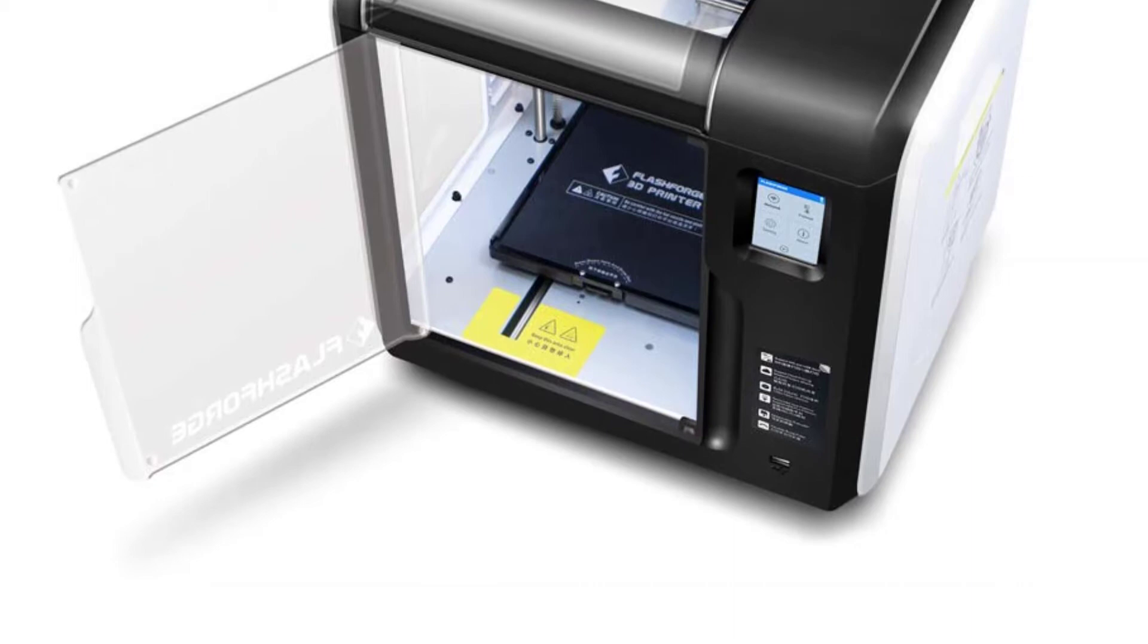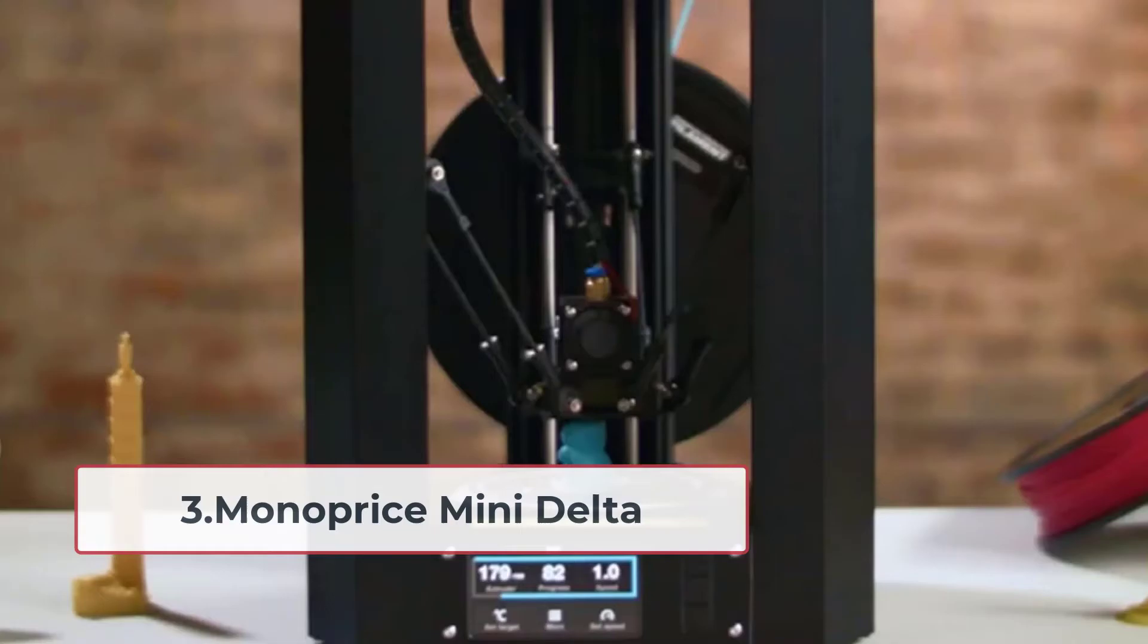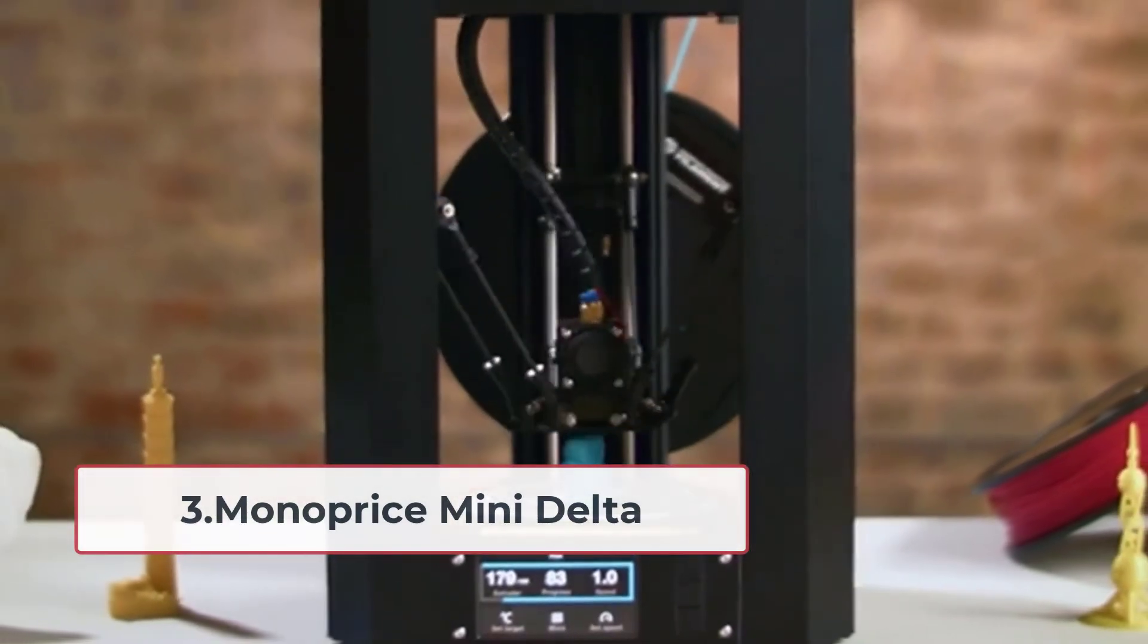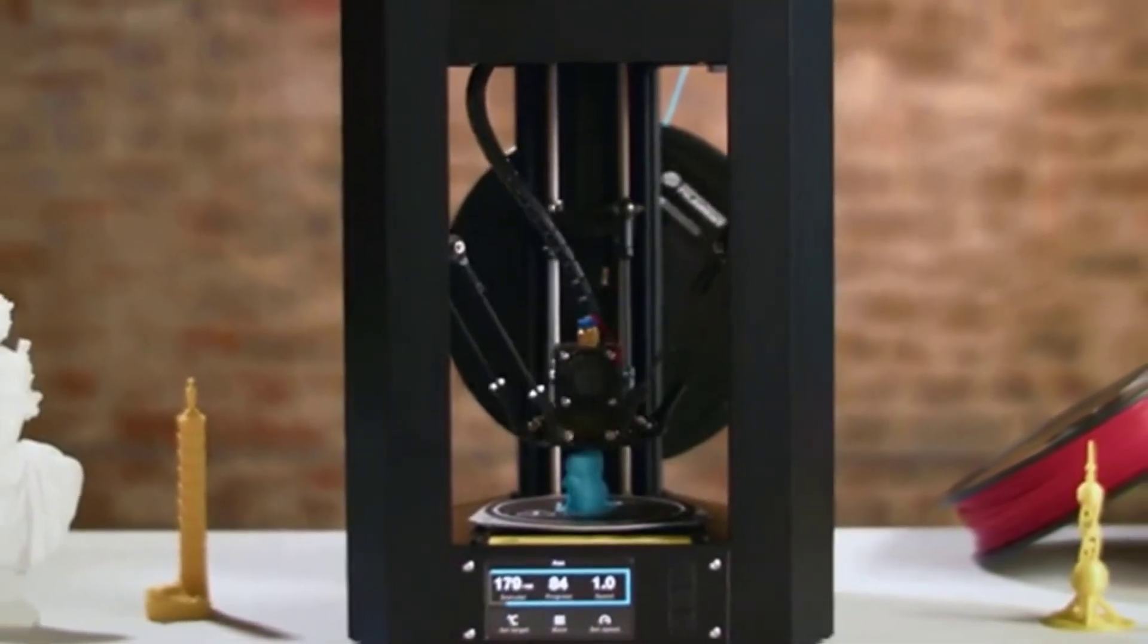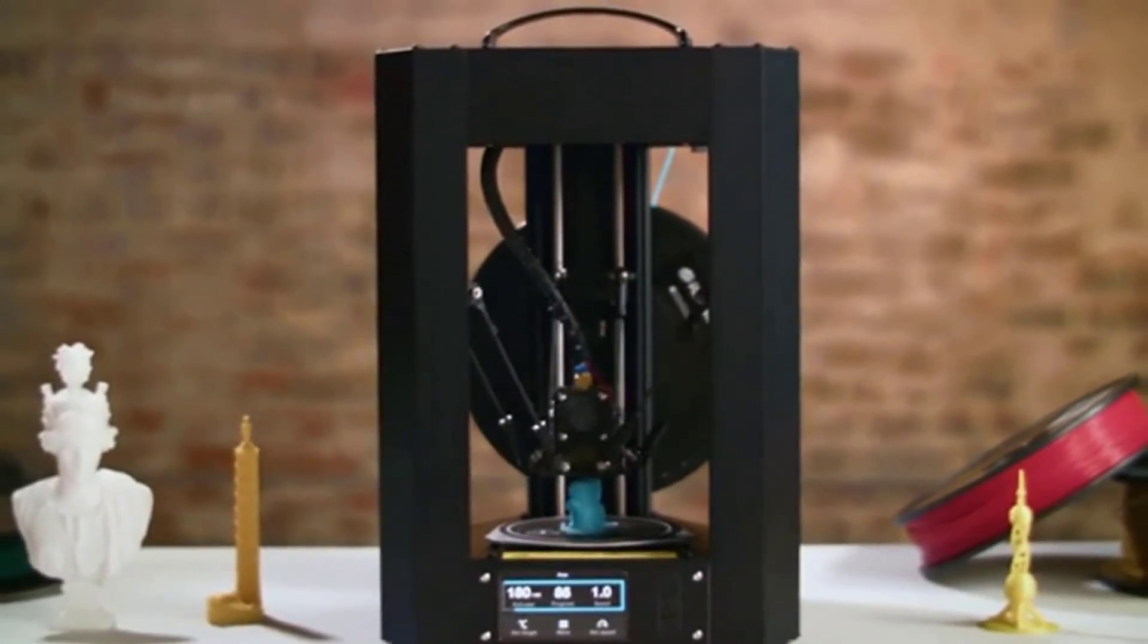At number three, Monoprice Mini Delta. Monoprice threw yet another hat in the mini 3D printer ring with its Mini Delta, and it defeats its brethren, the Mini V2, in the process.